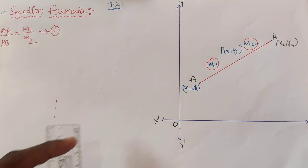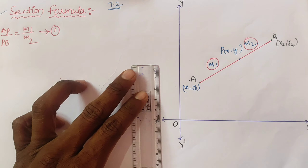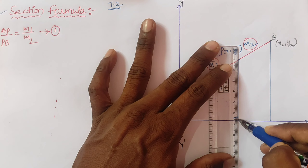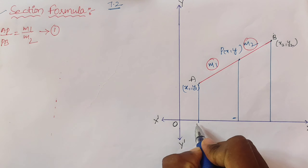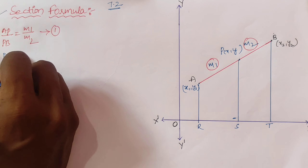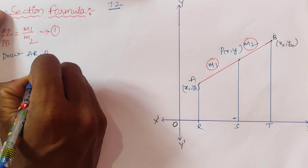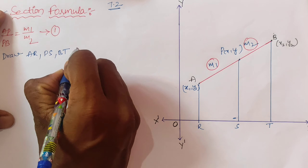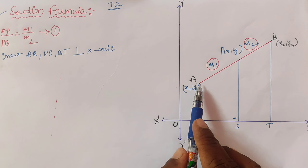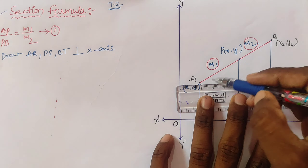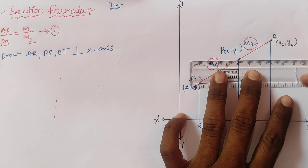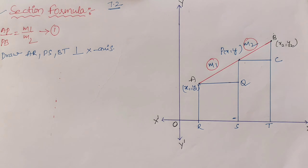Now we'll draw perpendiculars from A, P, and B to the x-axis, naming them AR, PS, and BT respectively. We also draw a parallel line to the x-axis from A, naming the intersection point as Q, and from P, drawing a parallel to the x-axis and naming that point as C.